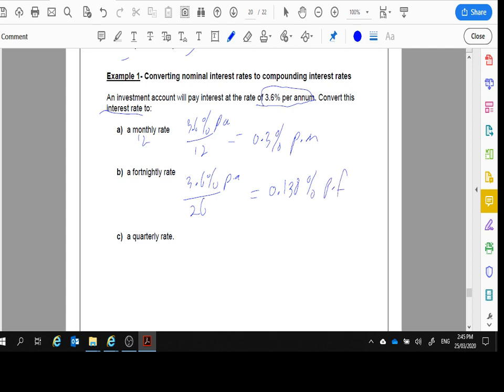And quarterly, well again 3.6% per annum, that's what they've told us. We want it for a quarter; there's 4 quarters in a year. Divide this by 4, which means we're getting 0.9% per quarter.